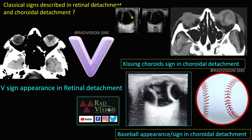This is a case of choroidal detachment with subchoroidal collection — the classical kissing choroidal detachment. Another case of choroidal detachment shows the baseball sign or baseball appearance. Remember: V-sign in retinal detachment; kissing choroidal detachment and baseball sign in choroidal detachment.